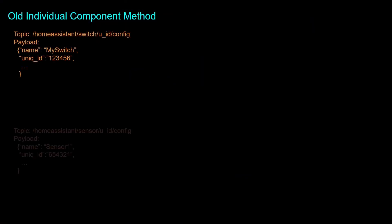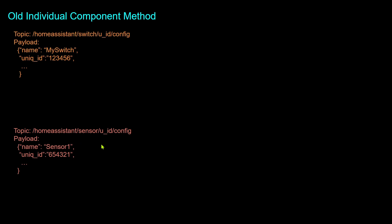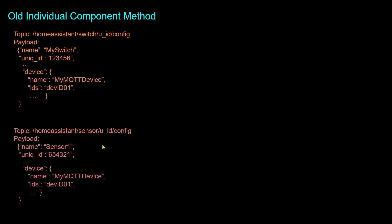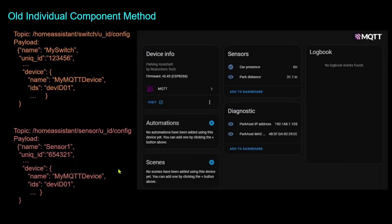With the original discovery method, now called the component method, each entity or component in Home Assistant is created with a separate MQTT message consisting of a topic containing the component type — like switch, sensor, or light — and then the payload specific to that entity or component. If you wanted multiple entities to be combined as part of a single device, you then added a nested device key for each entity. Entities with the same device info would then be combined into a device under Home Assistant.